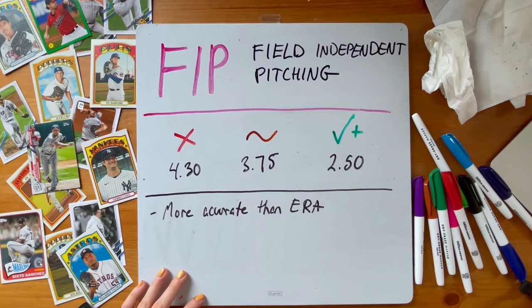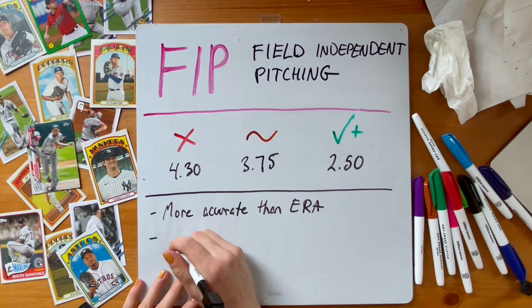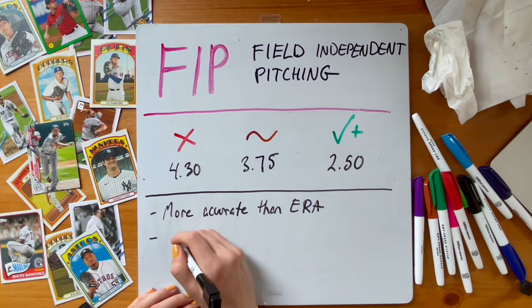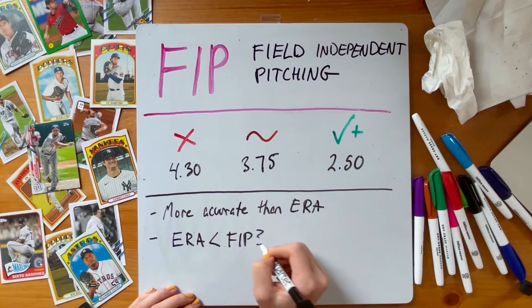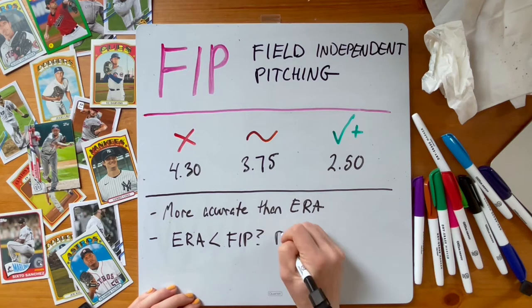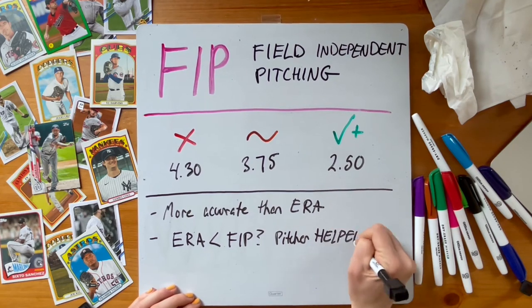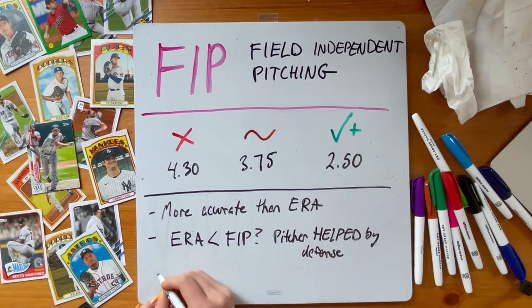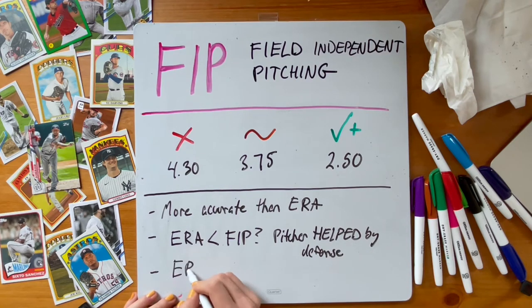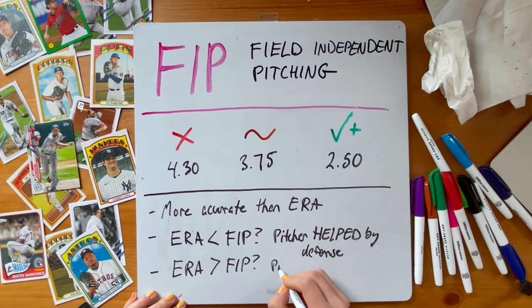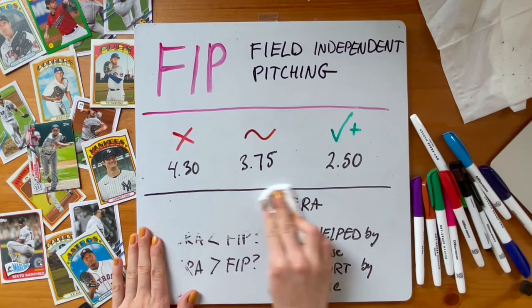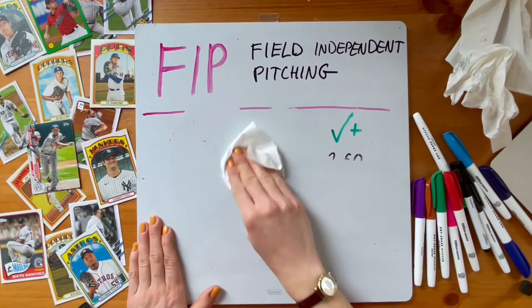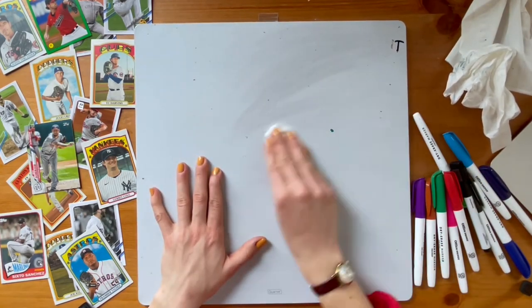Comparing ERA and FIP can be a useful way to see how much defense has hurt a pitcher's performance. Let's look at a hypothetical example — and remember, higher equals worse. If pitcher X has a 3.56 ERA and a 3.97 FIP, we can see he is helped by defense. His FIP, the more accurate stat, is less flattering than his ERA. But if it's vice versa — pitcher Z's ERA is higher than his FIP — we can conclude that he's better at pitching than his ERA indicates.